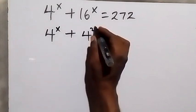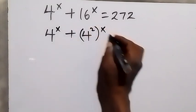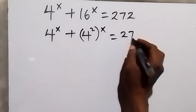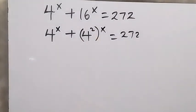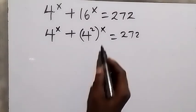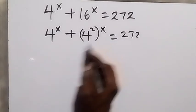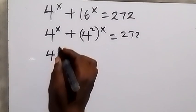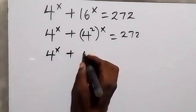square, then raised to power x equals 272. Here 4 square is the same thing as 16, and from the law of indices we can interchange this power, and this becomes 4 raised to power x plus 4 raised to power x